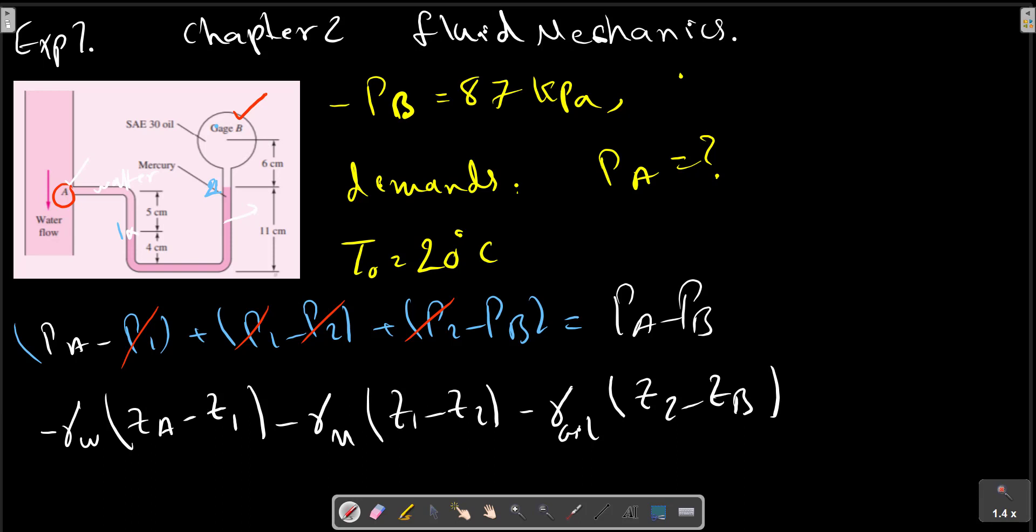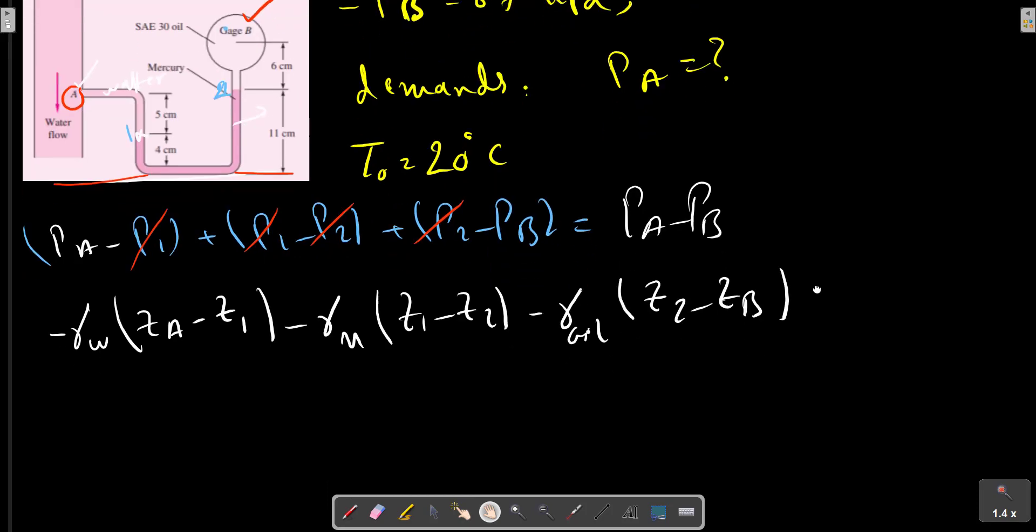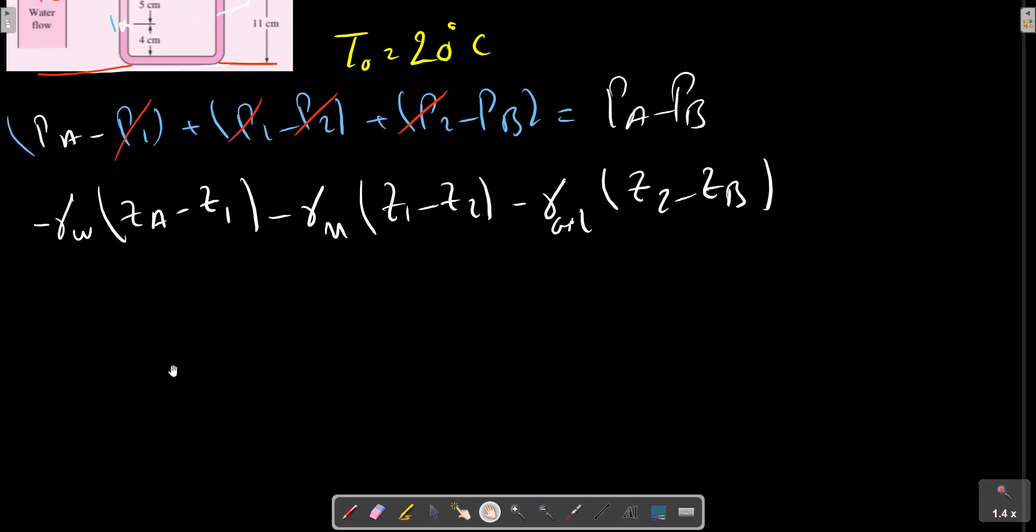The datum is in this position. The datum is arbitrary and because of the geometry dimensions we can consider this line as datum for calculation. So we can extract the specific weight from table 2.1 in chapter 4 or in appendix A.